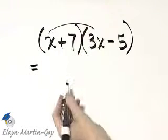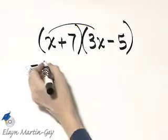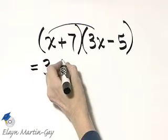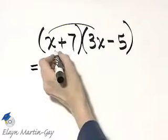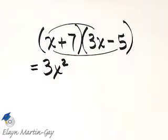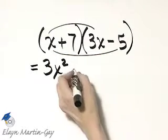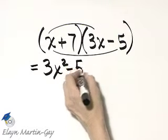That's first times first: x times 3x is 3x². Then the product of the outside terms, that's x times negative 5, which would be negative 5x. I'll write minus 5x.